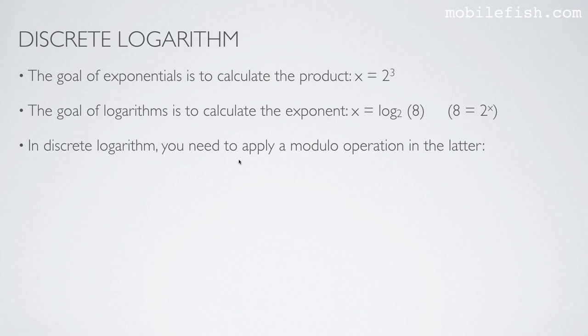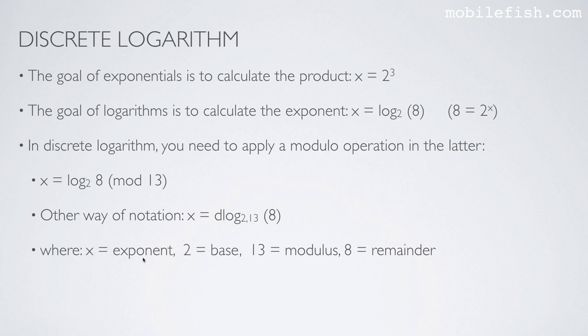In discrete logarithm you need to apply a modulo operation, which means applying the modulo operation in this equation, as you can see over here. Calculating log base 2 of 8 modulo 13. There is another way of notation, where x is the exponent, 2 is the base, 13 is the modulus, and 8 is the remainder.